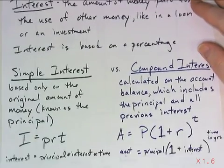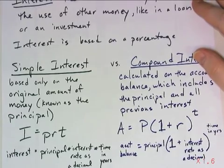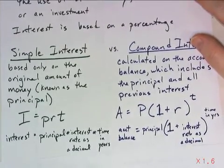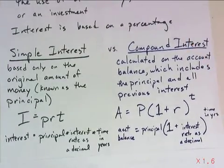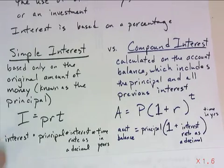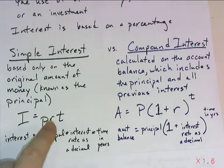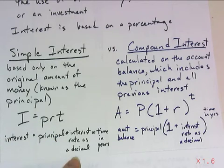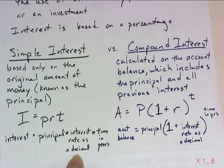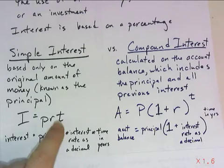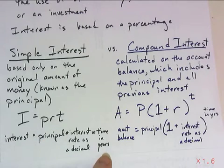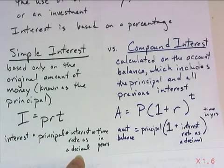You already saw the formulas on your formula chart — let's talk about what all of those letters mean. Capital I means the amount of interest, and you can find it by doing the principal amount times R, which is the interest rate converted to decimal form. That is extremely important — do not leave it in percent form. Then multiply by t, time in years, because the interest rate is generally an annual interest rate.